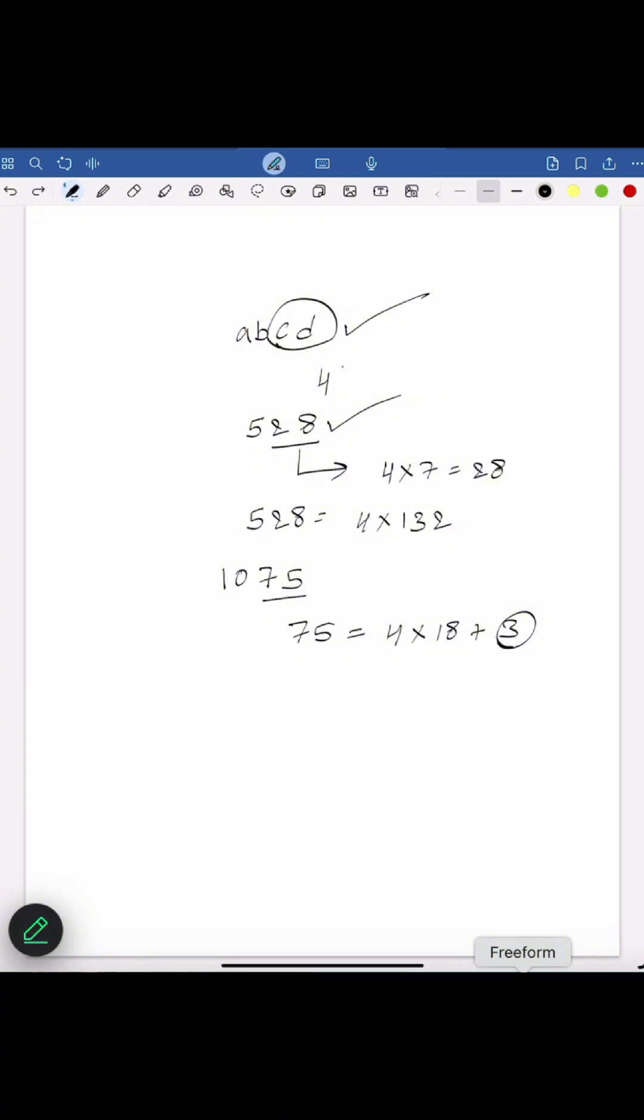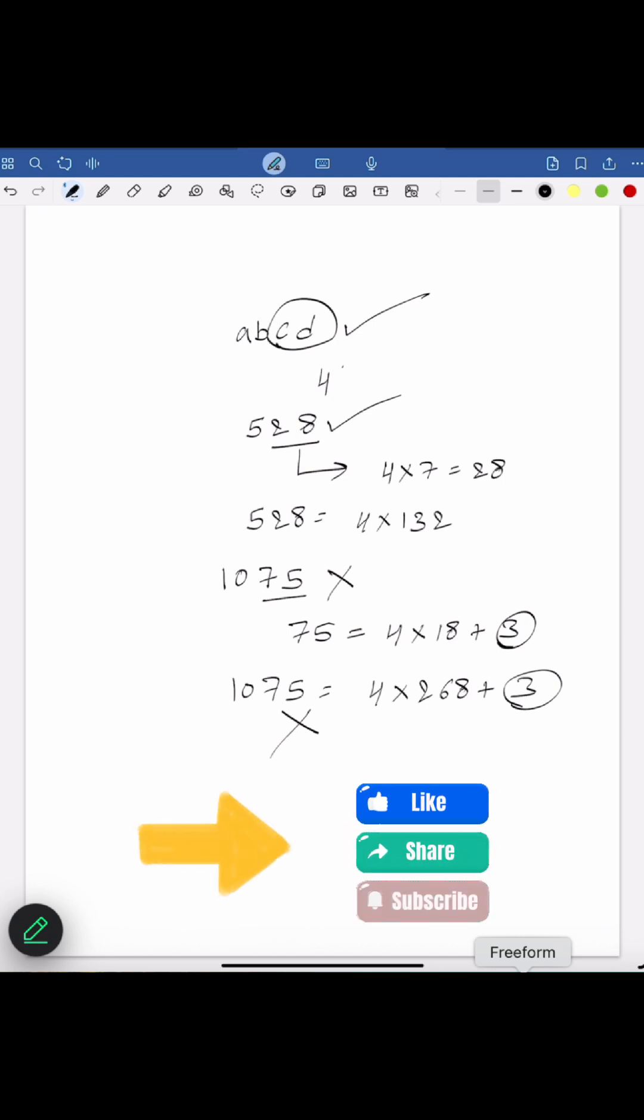So 1075 is also not divisible by 4. 1075, we can write it as 4 times 268 plus 3. As it is leaving a remainder of 3, 1075 is also not divisible by 4. This is the divisibility rule for 4.